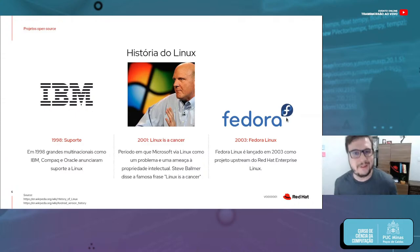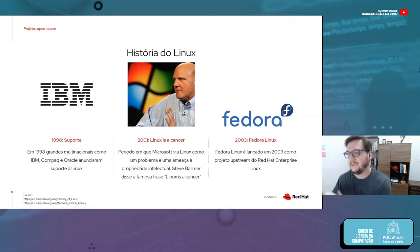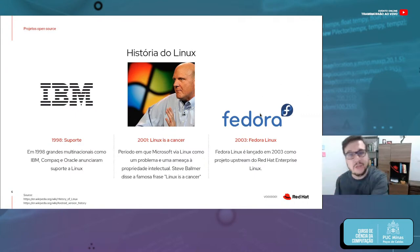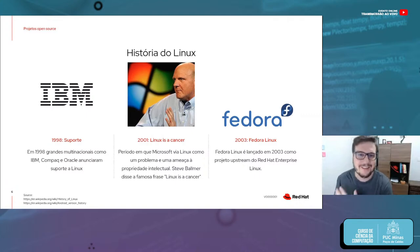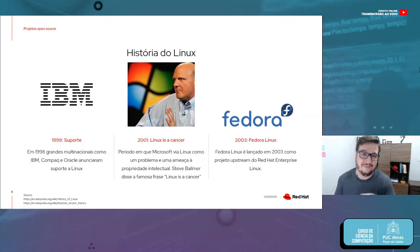A partir de 2003, lançamos a primeira versão do Fedora Linux. O Fedora é importante principalmente para o Red Hat porque é base para lançar o sistema operacional da empresa — é um projeto 100% aberto. A Red Hat toma esse sistema e lança o Red Hat Enterprise Linux. Eu utilizo no meu desktop. Na minha humilde opinião, é o melhor sistema operacional: gratuito, me dá a liberdade necessária, funciona tudo que eu preciso, e para desenvolvimento de software funciona perfeitamente.